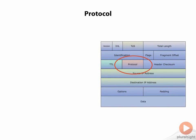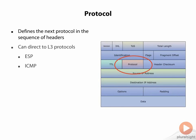The next field in the IP header is the protocol field. The protocol field tells me what the next protocol is going to be in this sequence of headers. Typically what we see is direction up to either a layer 3 protocol like ESP or ICMP, or an upper layer protocol like TCP or UDP. That's probably more common and more readily understood by people.